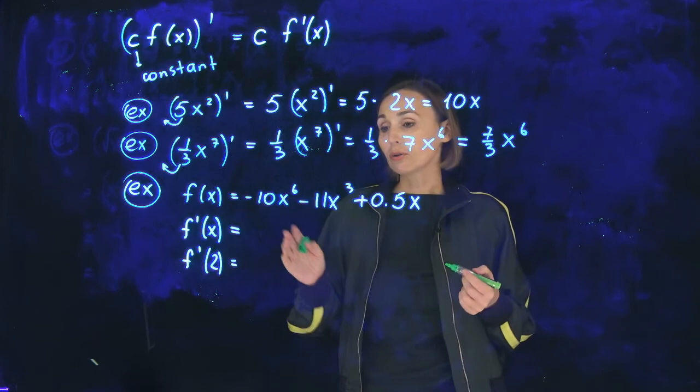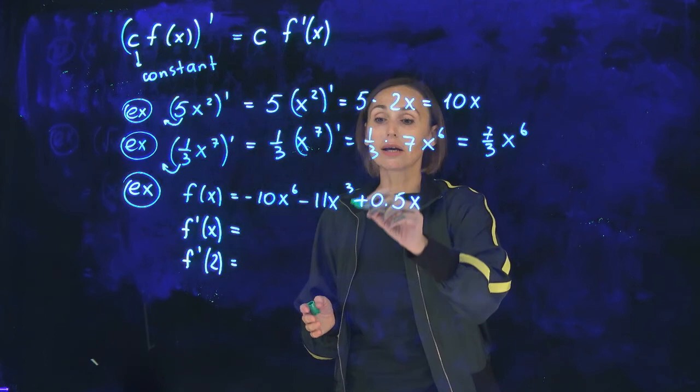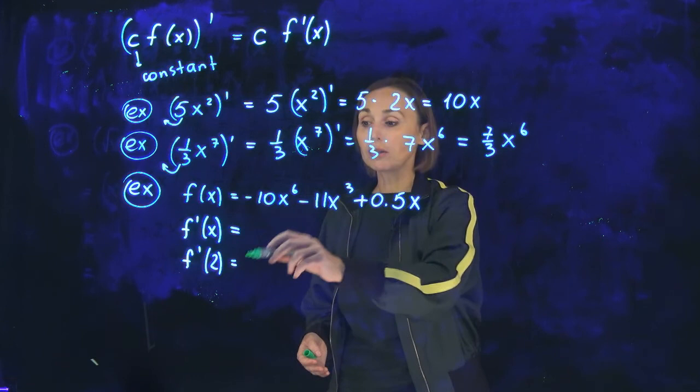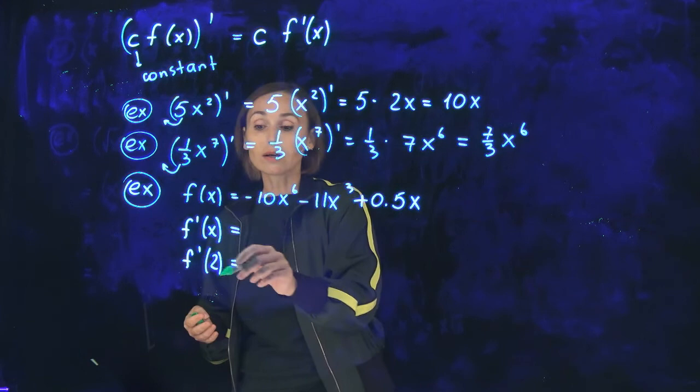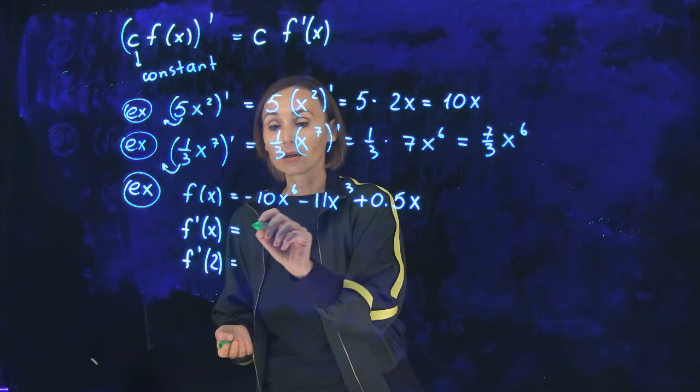One more example, you have a polynomial here: negative 10x to the 6 minus 11x to the power 3 plus 0.5x. You need to differentiate this polynomial and then find the derivative at the point. So plug in 2 for the argument and find derivative. Let's start from the derivative.